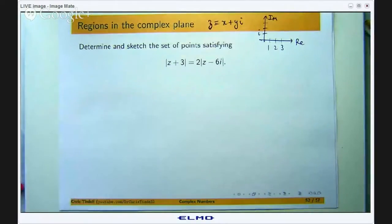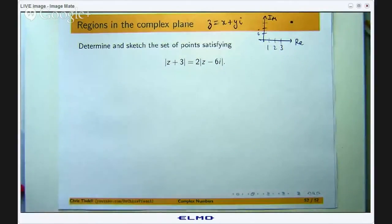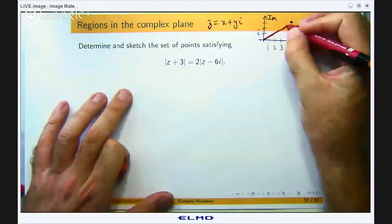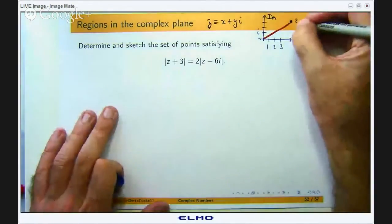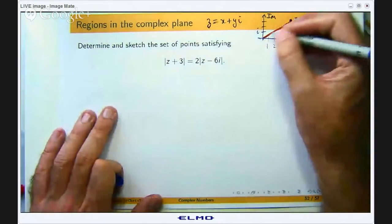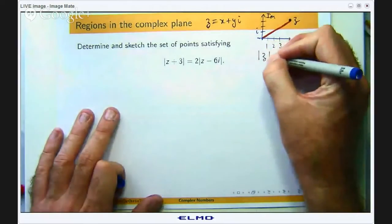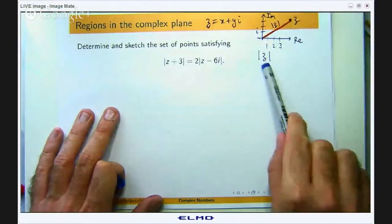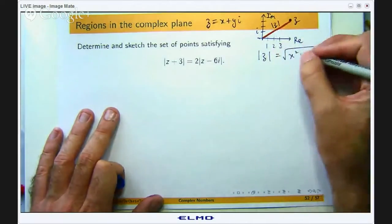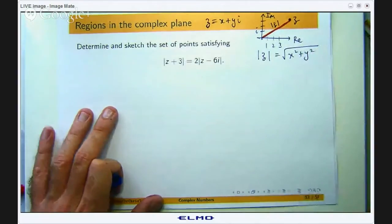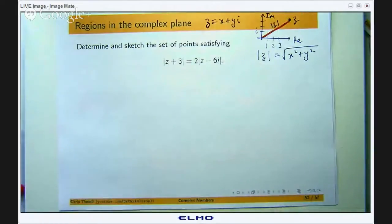And if you were to plot a point in the complex plane, some point z, and draw a little line segment joining the point to the origin, this distance here is known as the modulus of z. We use these two vertical lines to denote the modulus of it. And it is basically by Pythagoras just the square root of the sum of the squares of x and y.